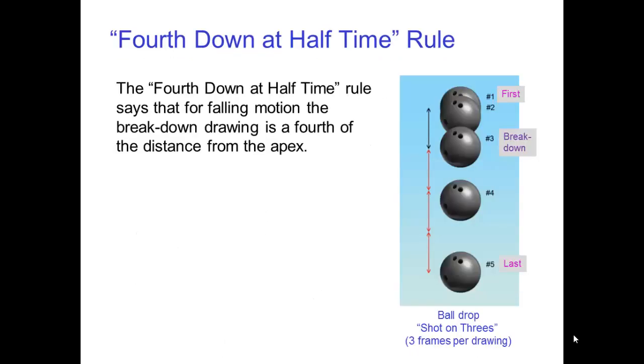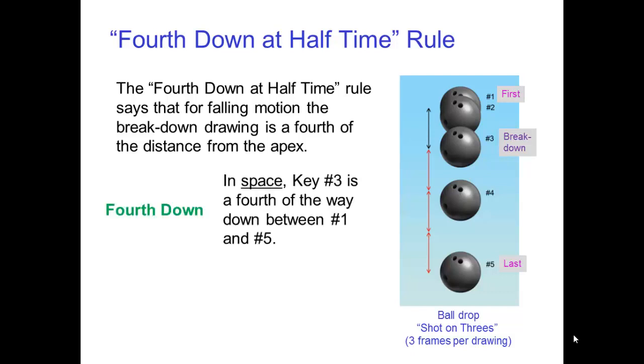The fourth down at half time is a useful rule for animating falling motion by pose to pose action. The fourth down at half time rule says that for falling motion, the breakdown drawing is a fourth of the distance from the apex. In this example, key number three is the breakdown drawing. In space, key number three is a fourth of the way down between number one and number five. In time, key number three is halfway between number one and number five since it is the breakdown drawing.